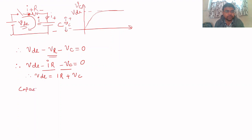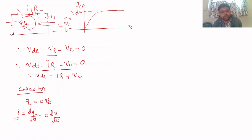Now I is the current passing through the capacitor. In the case of a capacitor, the charge is Q = CV, where C is the capacitance and V is the voltage VC. Differentiating gives dQ/dt = C·dVC/dt, so current I can be replaced with C·dVC/dt. Let's call this equation number two.